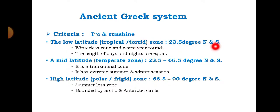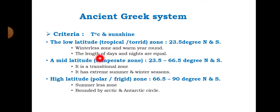The low latitude or tropical zone is located between 23.5 degrees north and south — that is, between the equator up to 23½° north and the equator up to 23½° south. This region is a winterless zone, year-round warm, receives the highest amount of rainfall and high temperatures throughout the year. The length of days and nights are equal in the low latitude.